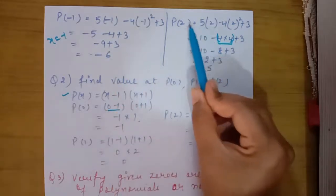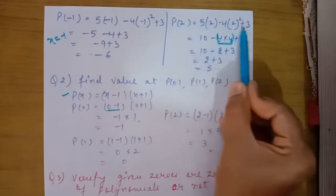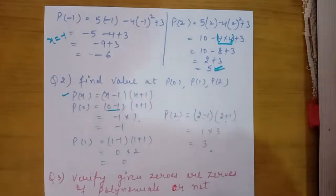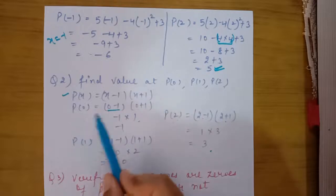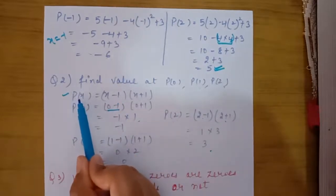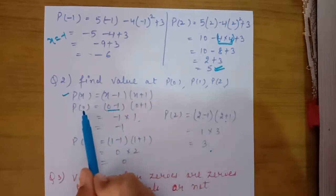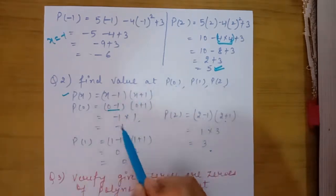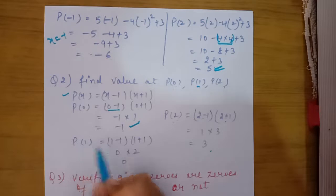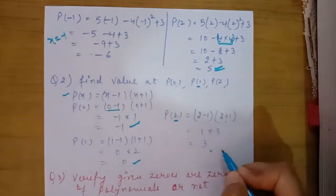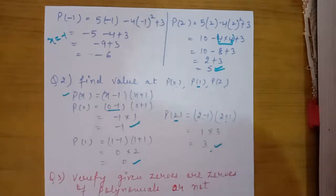In the third part, we find the values p(0), p(1), and p(2) for the given polynomials. We already solved two polynomials in your lecture. Now taking one more part: p(x) equals (x minus 1)(x plus 1). When we replace x with 0 we get that answer; replacing with 1 we get another answer; and replacing with 2 gives the final answer. It is very easy to find the value of a polynomial at a given value.